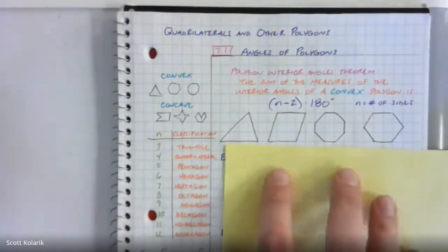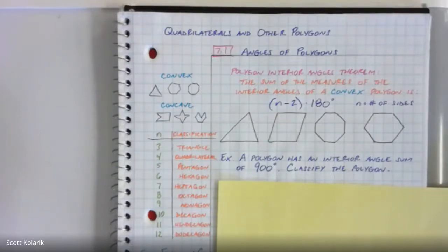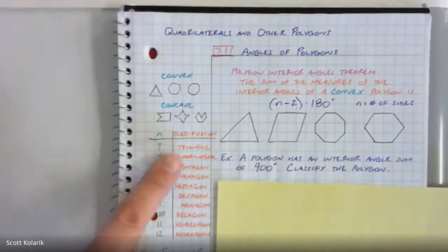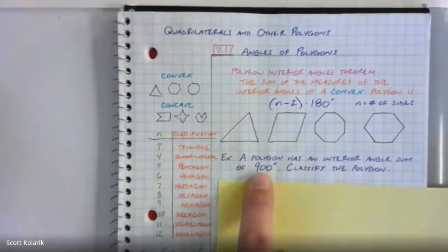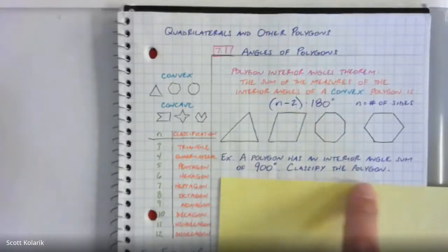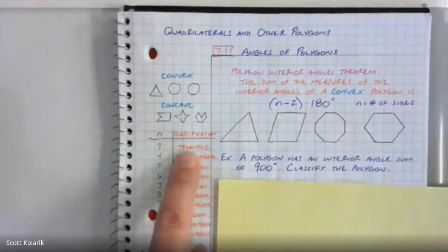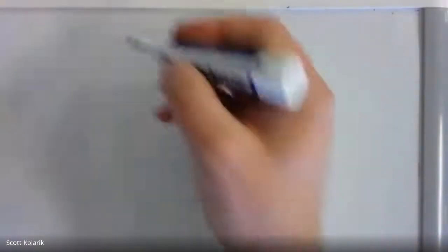The other way this can be asked is less straightforward but still manageable. A polygon has an interior angle sum of 900 degrees — classify the polygon. 'Classify' means give it a name: is it a triangle, decagon, pentagon? You need to determine which name it gets based on that piece of information. Let's jump to the whiteboard.